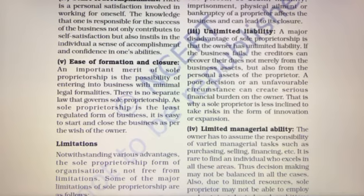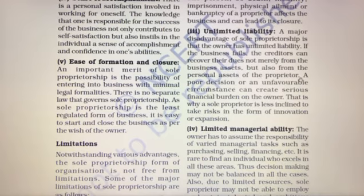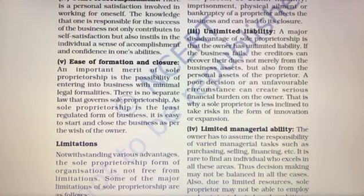If the business fails, the creditors can recover their dues not merely from the business assets but also from the personal assets of the proprietor. अगर किसी वजे से business fail हो जाता है, तो जिसने कर्ज दिया है वो अपनी वसूली सिर्फ business assets से नहीं बल्कि proprietor की personal belongings बेच के भी कर सकता है।